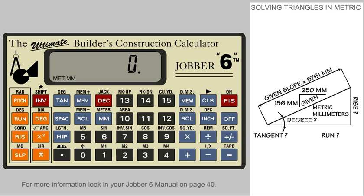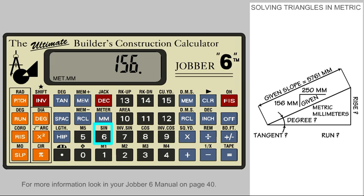In order to solve our triangle, first we must solve for the tangent of the given pitch by using the run and rise triangle key. Enter the 250 millimeters in the run and assign this as the run. Now enter the 156 millimeters in the rise and assign this as the rise. The tangent for this percentage ratio has been automatically calculated and put in the pitch. To display it, press the pitch key. This is our tangent.